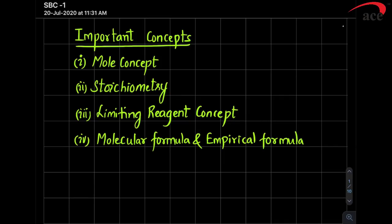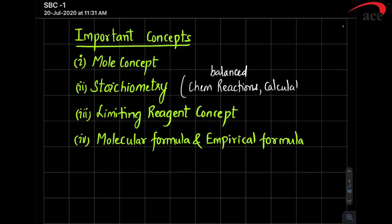The most important topics of this chapter — Some Basic Concepts — are: mole concept, stoichiometry (the science which deals with chemical reactions, balanced chemical reactions, and calculations associated with them), limiting reagent concept (slightly difficult, but based on stoichiometry), and lastly molecular formula and empirical formula.